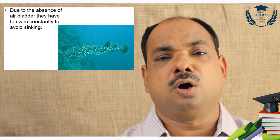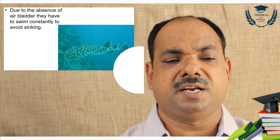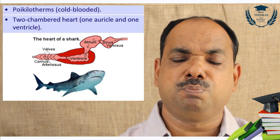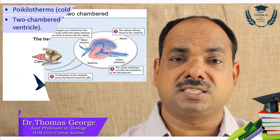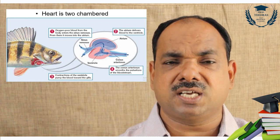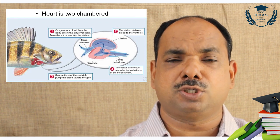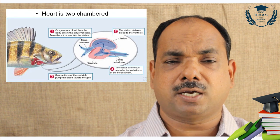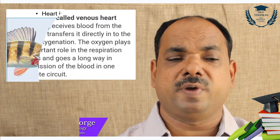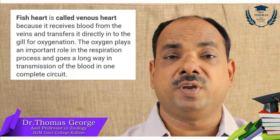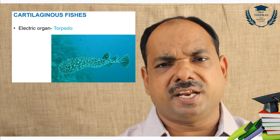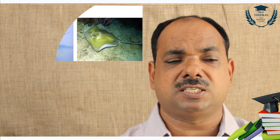They have no air bladder, so they are continuously swimming. The heart is made up of two chambers and always contains impure blood — such a heart is called a venous heart. In addition, sinus venosus opens into the auricle and bulbus arteriosus emerges from the ventricle. Fish heart is always called a venous heart.